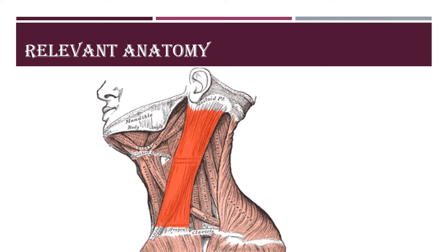Before getting into the topic, some relevant anatomy regarding the condition. We need to know the origin, insertion, nerve supply and action of the sternocleidomastoid muscle. It has two heads: the sternal head originates from the manubrium sterni, and the clavicular head originates from the middle third of the clavicle. The insertion is the lateral surface of the mastoid process of the temporal bone and the lateral half of the superior nuchal line of the occipital bone. The nerve supply is the accessory nerve. When acting alone, it rotates the head to the contralateral side and flexes the head on the same side. It is also known as the accessory muscle of inspiration.